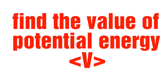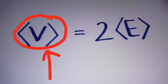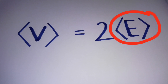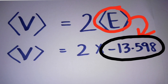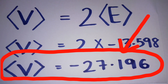First, let us find the value of potential energy, V. From the previous video, the expectation value of potential energy is equal to twice the expectation value of the energy. Substituting the value of energy, which is negative 13.598, and solving, the expectation value of the potential energy equals negative 27.196 electron volt.